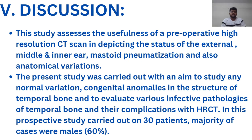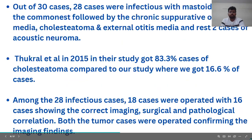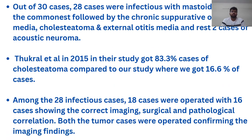The present study was carried out to evaluate normal variation, congenital anomalies in the structure of the temporal bone, and various infective pathologies with their complications using HRCT. This prospective study on 30 patients showed a majority being male. Out of them, 28 showed infectious causes, with mastoiditis being most common, followed by CSOM, cholesteatoma, and external otitis media, and 2 cases were acoustic neuroma.